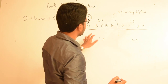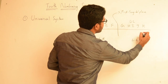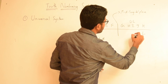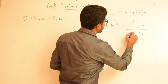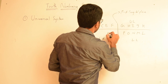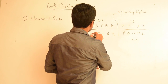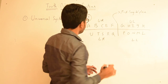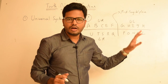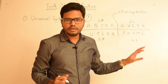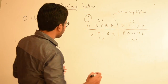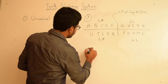We have 10 teeth in the primary dentition and continue in a clockwise direction. This is how deciduous primary dentition is represented in the Universal Numbering System. Now coming to secondary or permanent dentition.